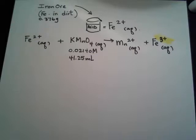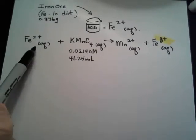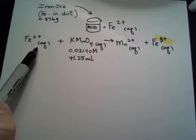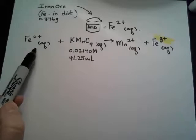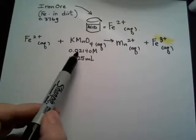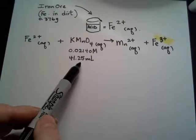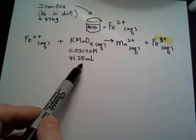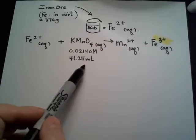Now I take that Fe²⁺ aqueous. And that's what's showing up here. I take that and I put it in a little Erlenmeyer flask. And I fill my burette with potassium permanganate. I fill it with a 0.02140 molar standardized solution of my permanganate ion.